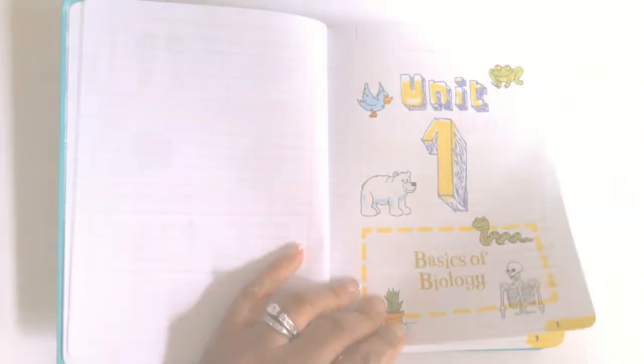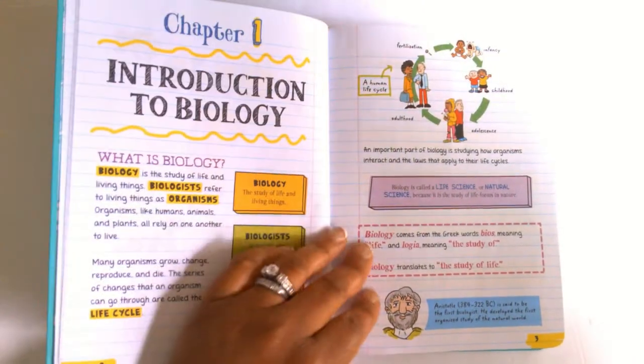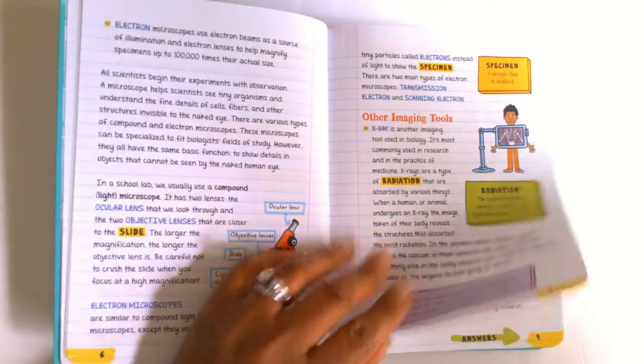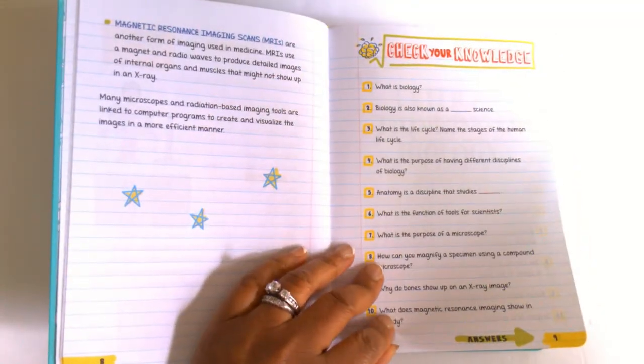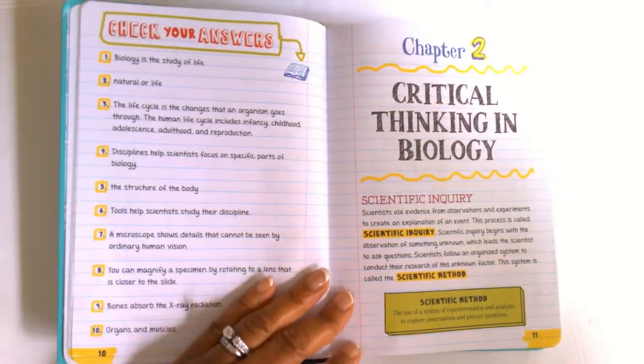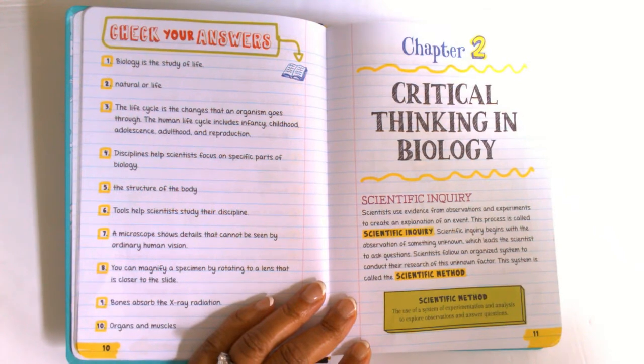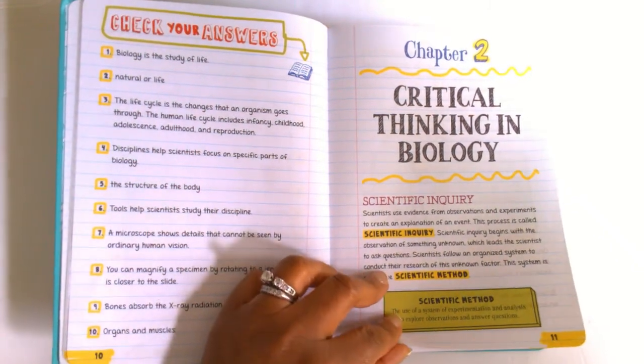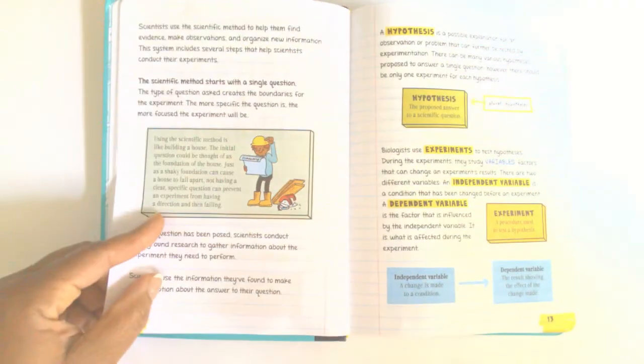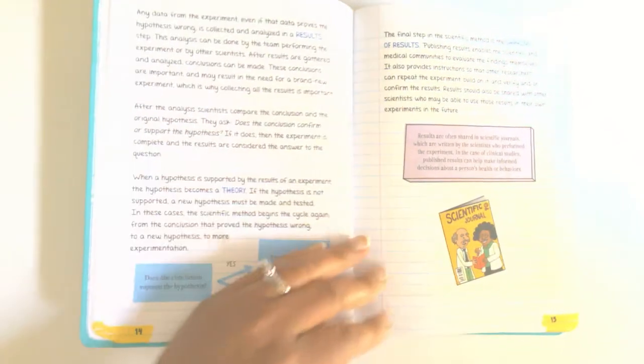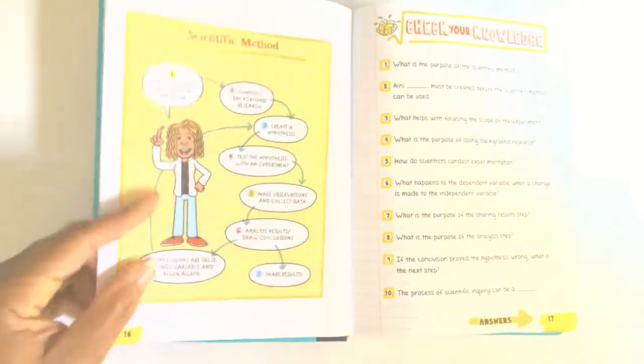Each unit has chapters and at the end of each chapter there is a check your knowledge. And on the back of the check your knowledge is a check your answers. And it is set up the same exact way for each chapter in the book.